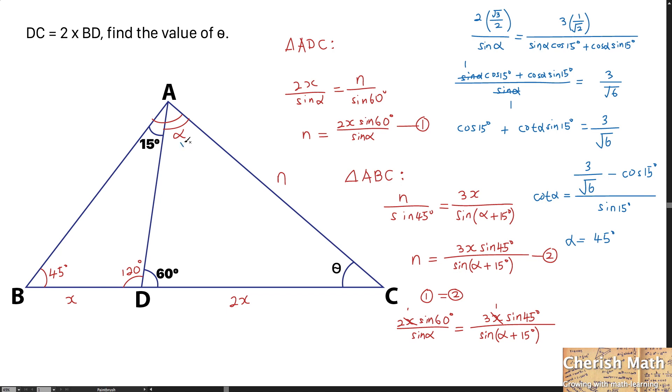I'll label this as 45 degrees. Now, the final step is to find the value of theta. Using supplementary angles, theta equals 180 degrees minus 45 degrees minus 60 degrees, which leaves 75 degrees.